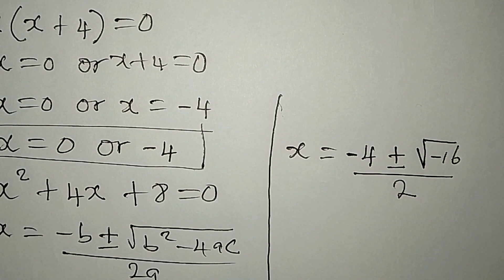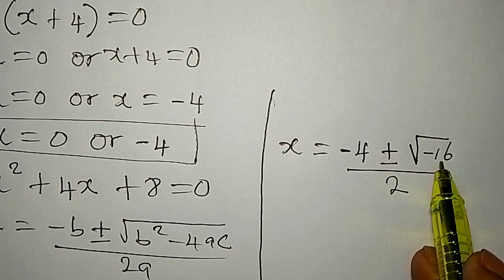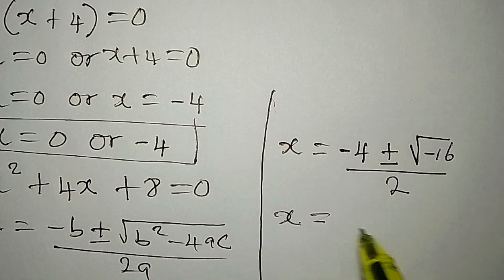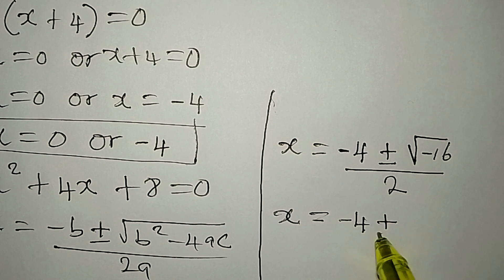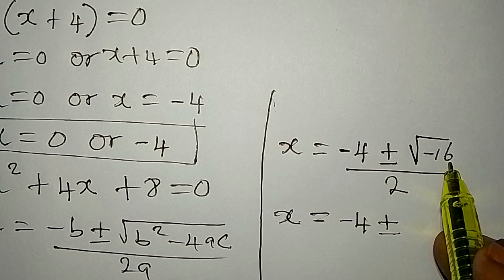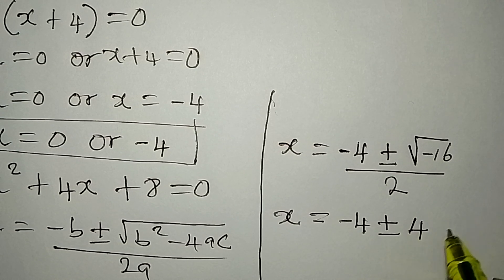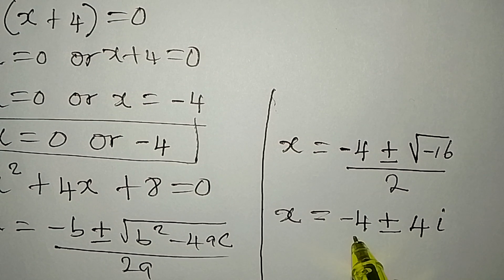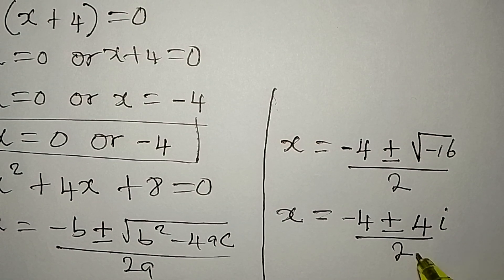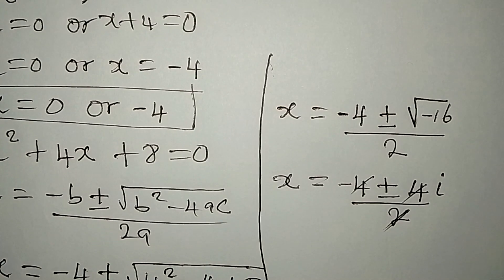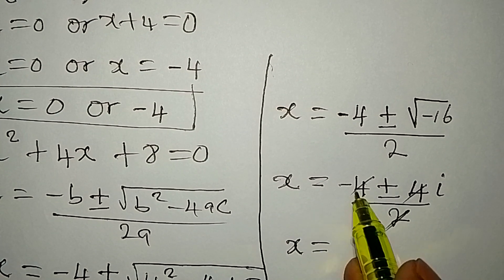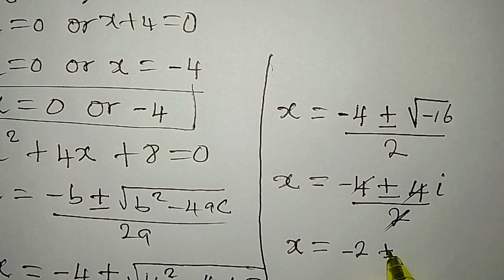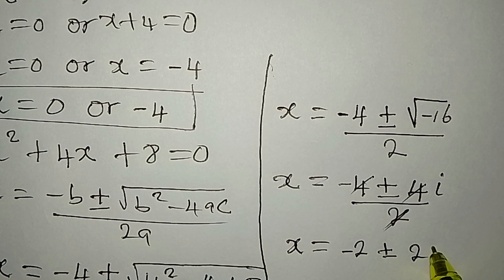This negative 16 cannot be evaluated on a calculator because it gives a complex solution. The square root of negative 16 equals 4i, since the square root of 16 is 4 and the negative gives us the imaginary unit i. Dividing everything by 2: x equals negative 2 plus or minus 2i.